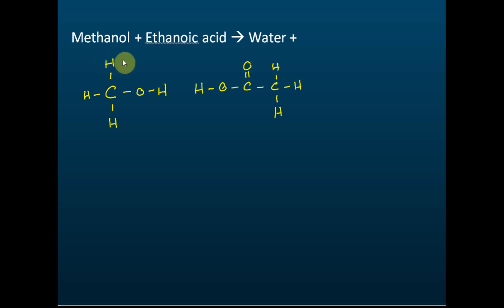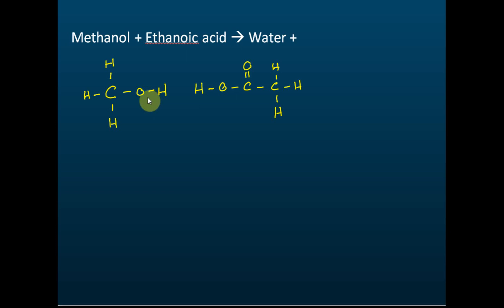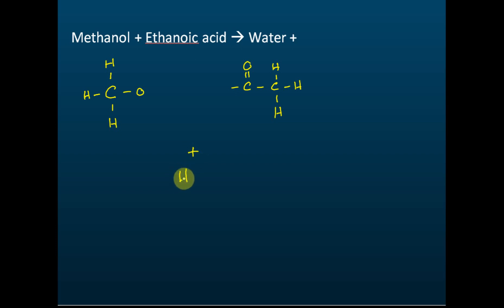We have learned that ester is produced when alcohol reacts with carboxylic acid. The name of the ester produced depends on what alcohol and carboxylic acid we use. For example, if we use methanol and ethanoic acid as the reactants, what happens is that the OH from the carboxylic acid and H from the alcohol is removed. They will form water, and the alcohol and the carboxylic acid will join together to form a new molecule called ester.